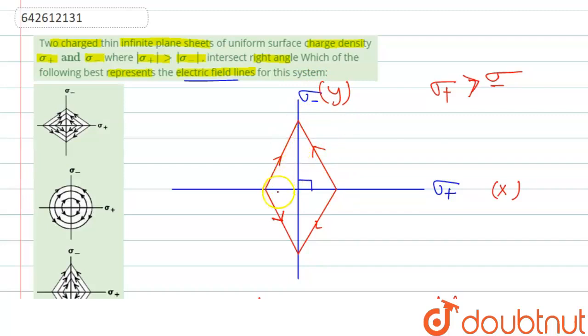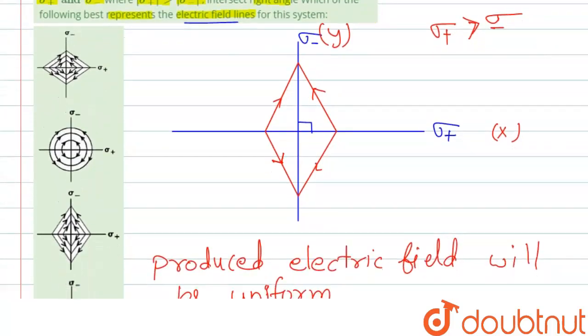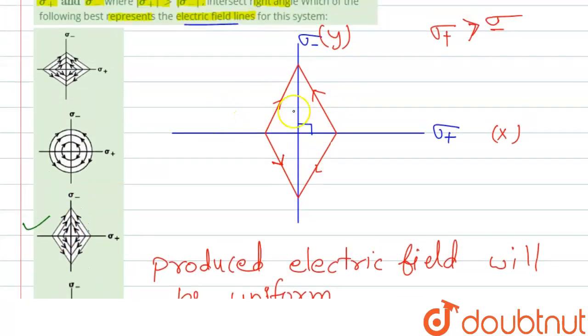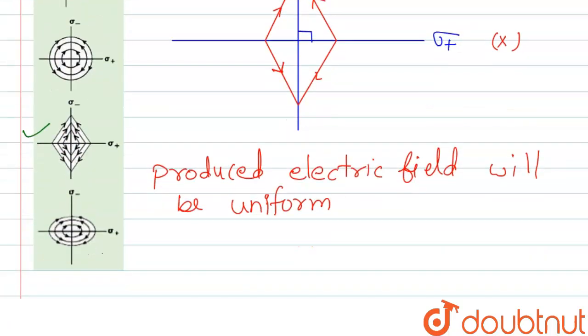As it is uniformly distributed, so if we check the options, the third option is correct because it is as what we have analyzed in this figure. Here we see that the electric field lines are uniformly distributed from positive sigma to negative sigma. And also the electric field lines are greater towards y, that is towards negative charge. So this is the correct option.